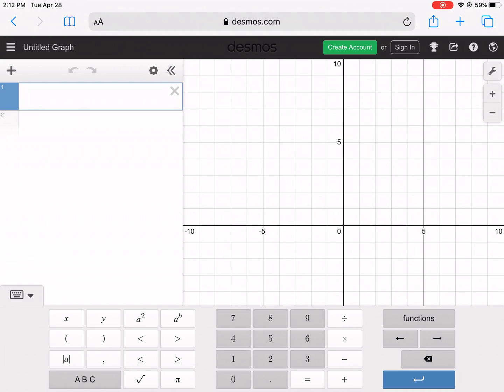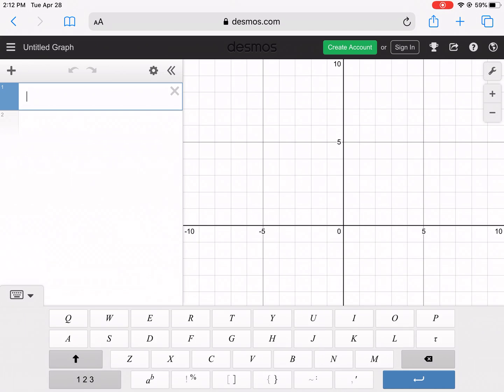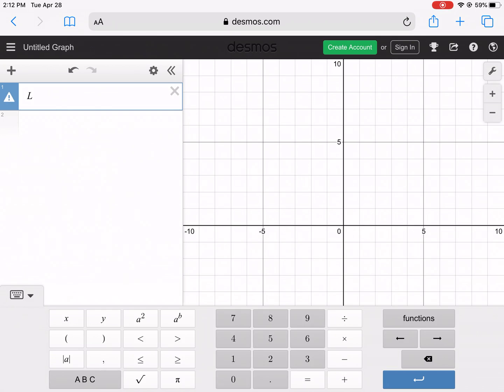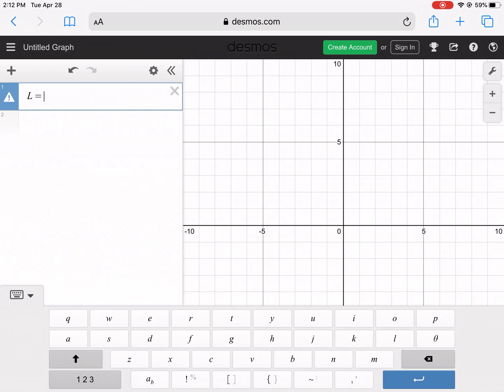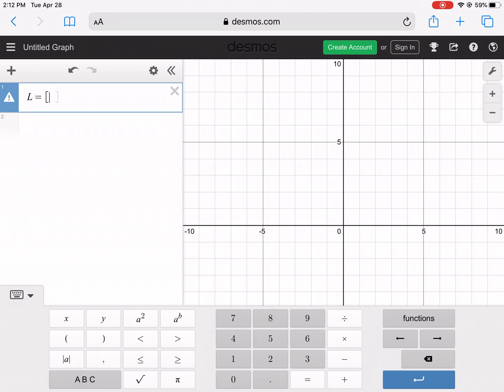Okay, like last week, we can also create histograms on Desmos. So I am going to create a histogram off of a random data set I found. If you remember like last week, the first thing you do is you capitalize L, equals, and then you do that little square bracket, and I'm going to type in all of the data.